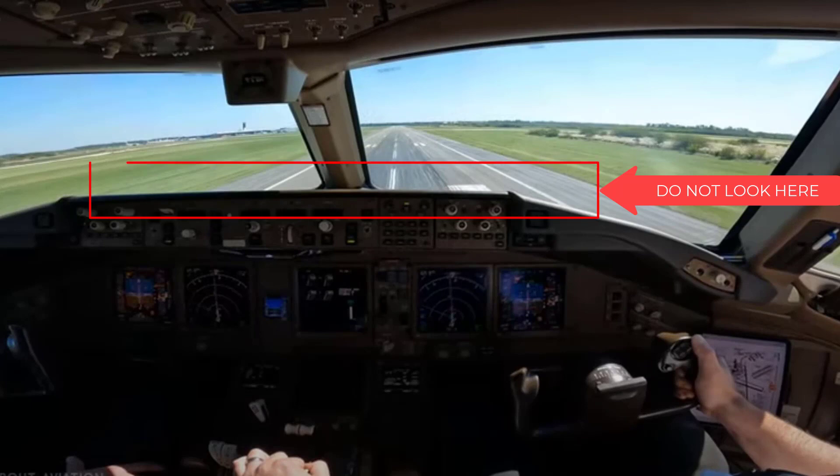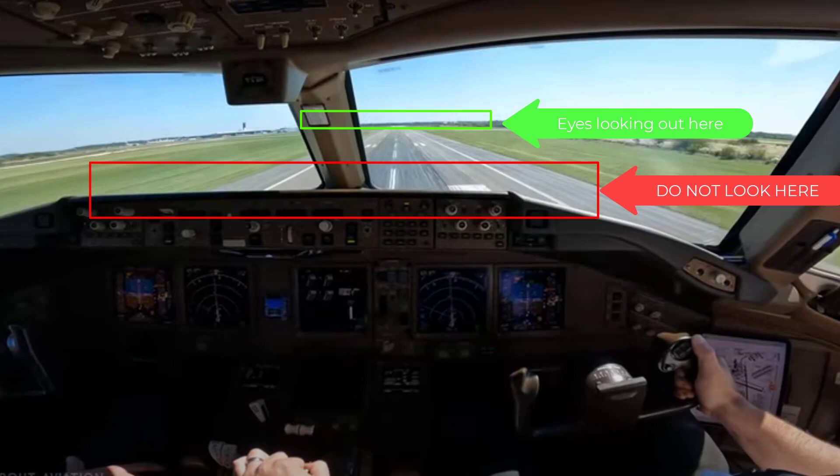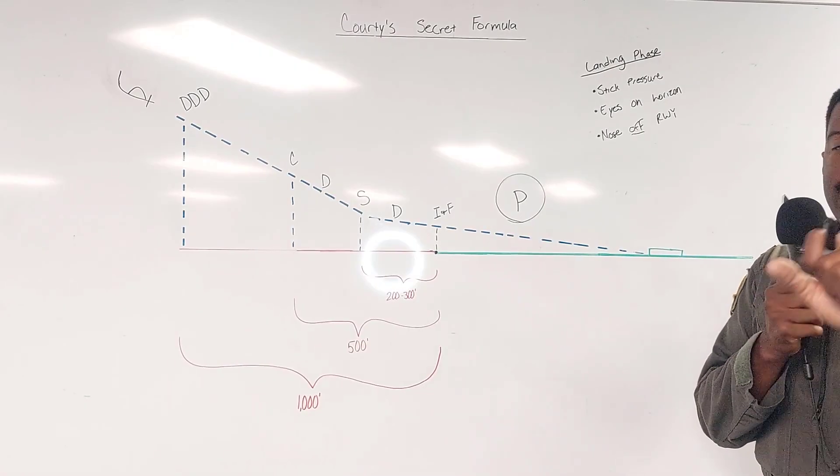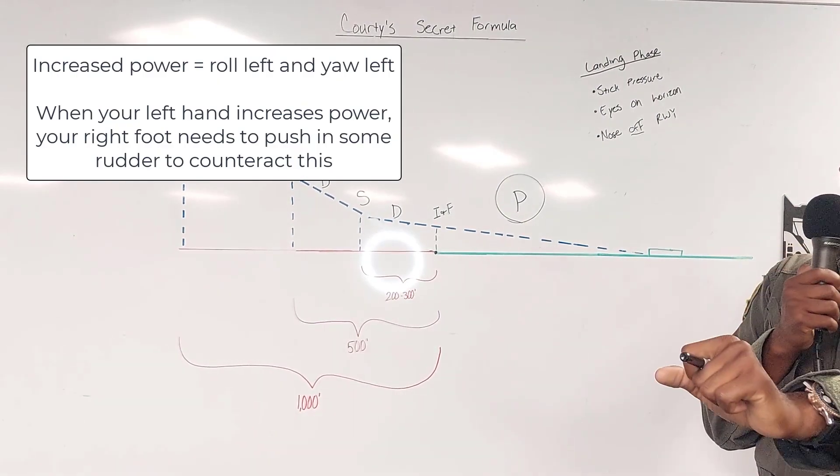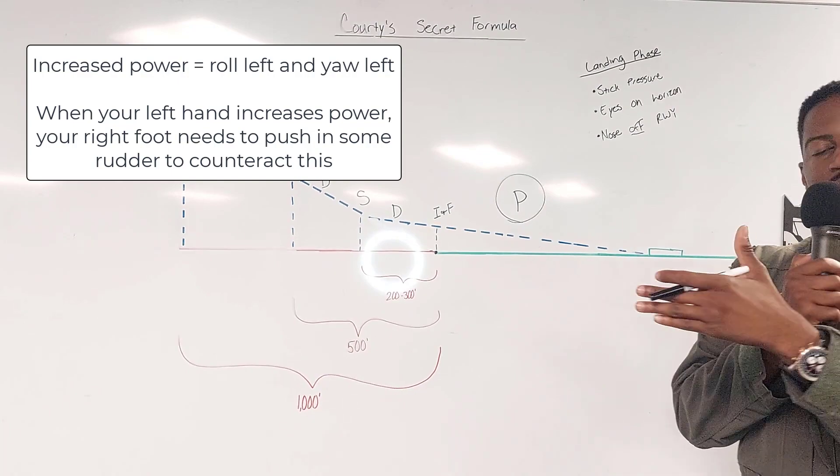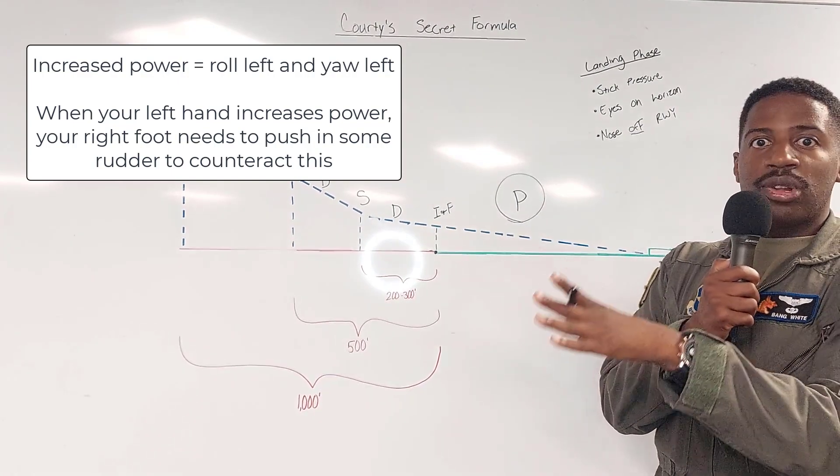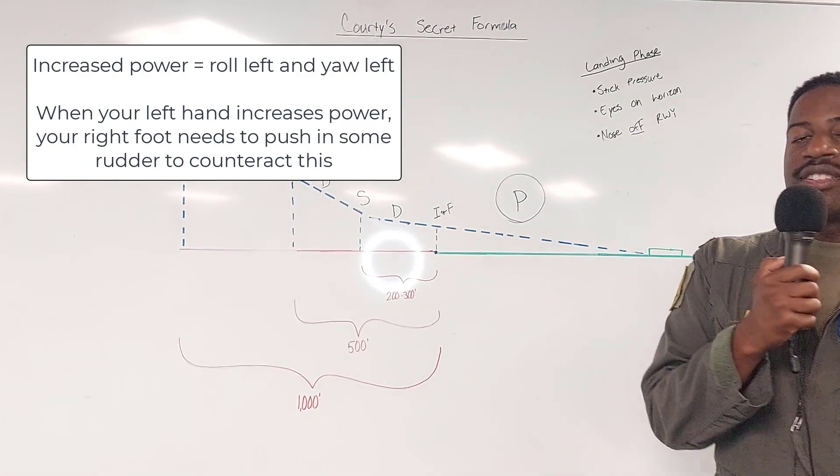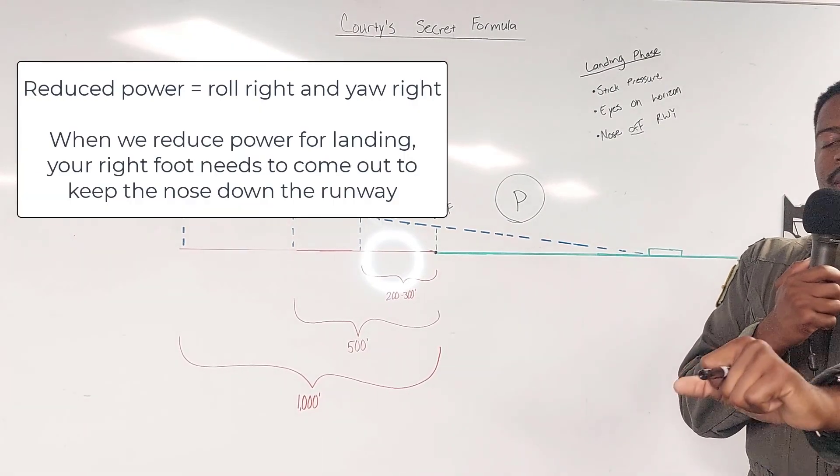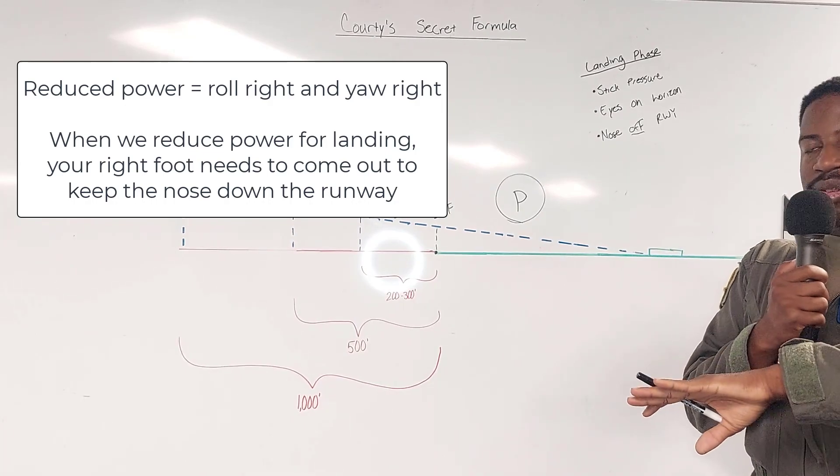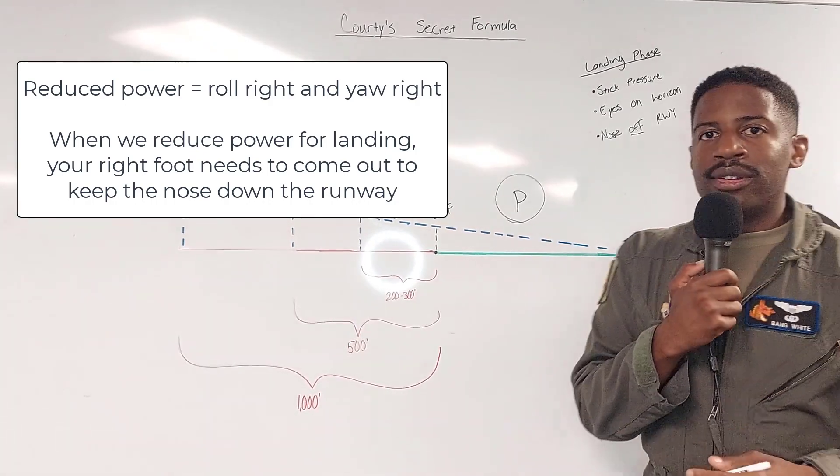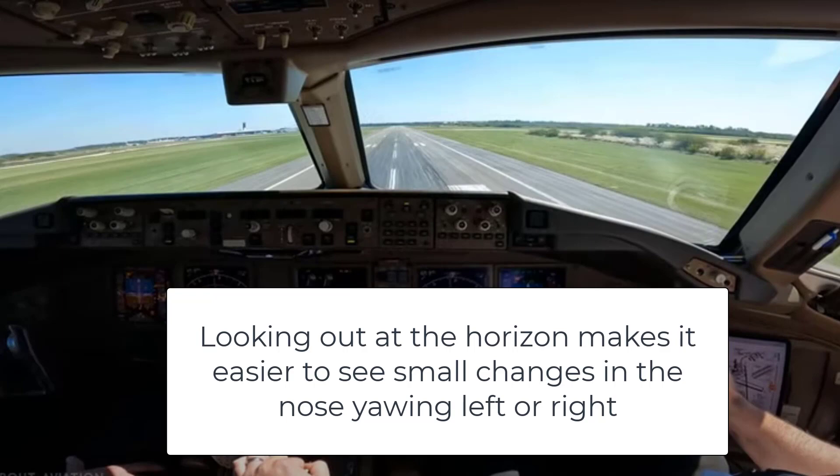The next thing is get your eyes on the horizon. Once we get into that flare, I'm looking all the way out on the horizon. And the most important part of that is that in the T-6, when I push up the power, my left hand and my right foot is connected, right? I'm going to push up the power, I'll need to compensate with some right rudder because the nose is going to want to pull off to the left, it's going to want to rotate, all that good stuff. Same thing happens when we go to idle. When I go to idle, my nose is going to want to peel off to the right.